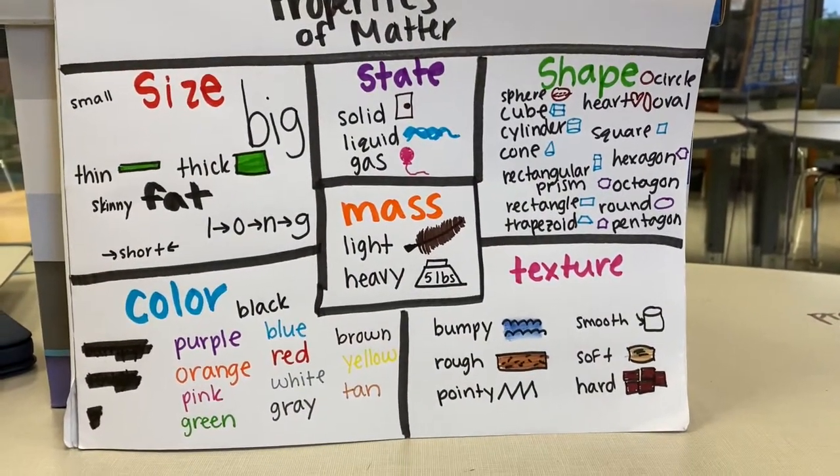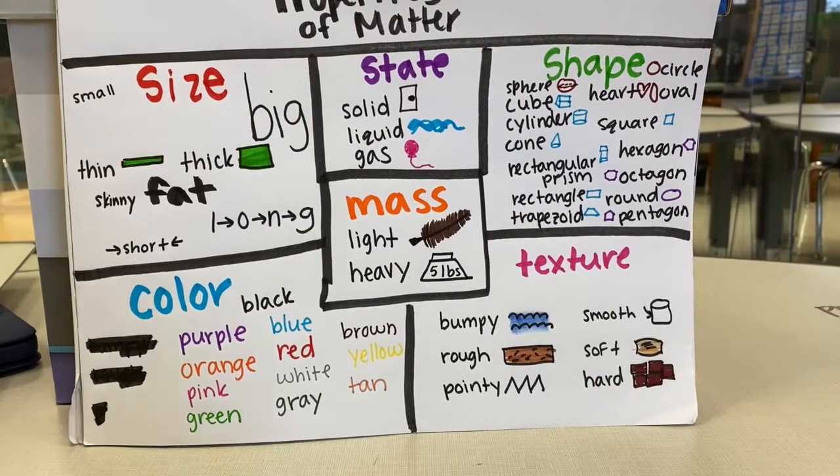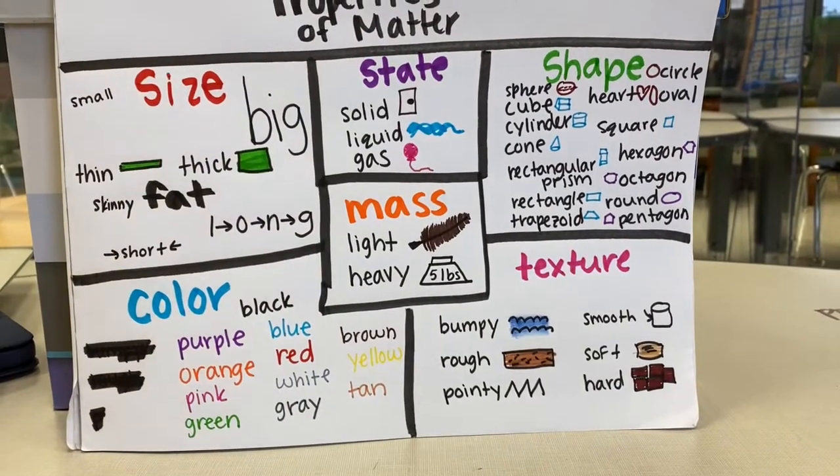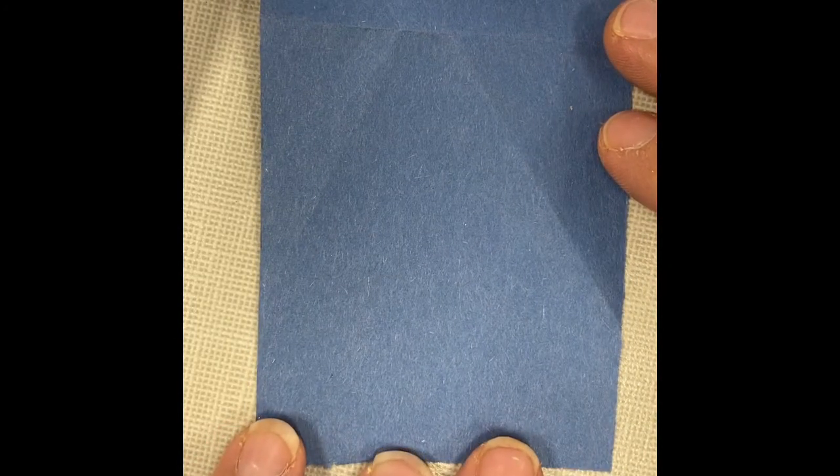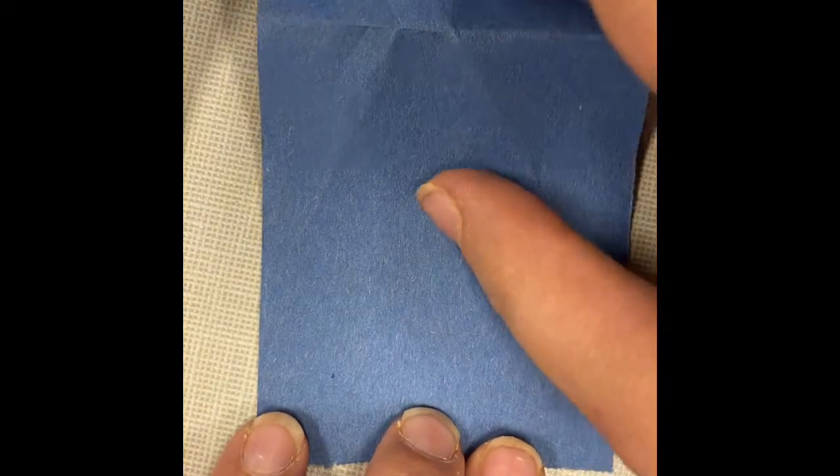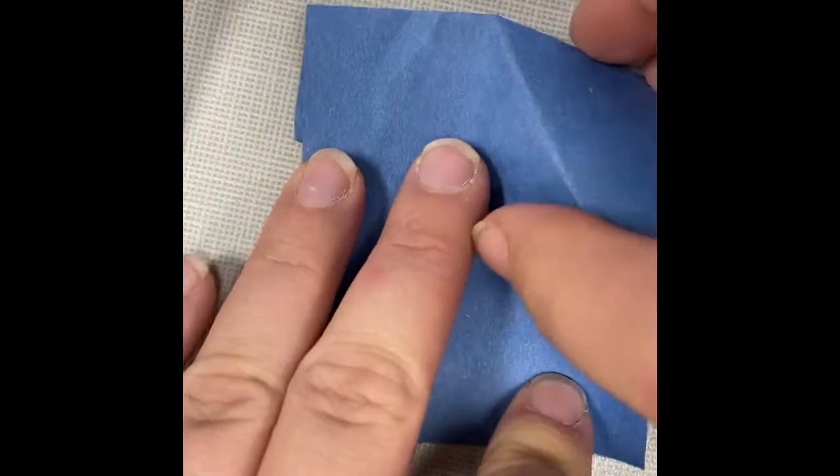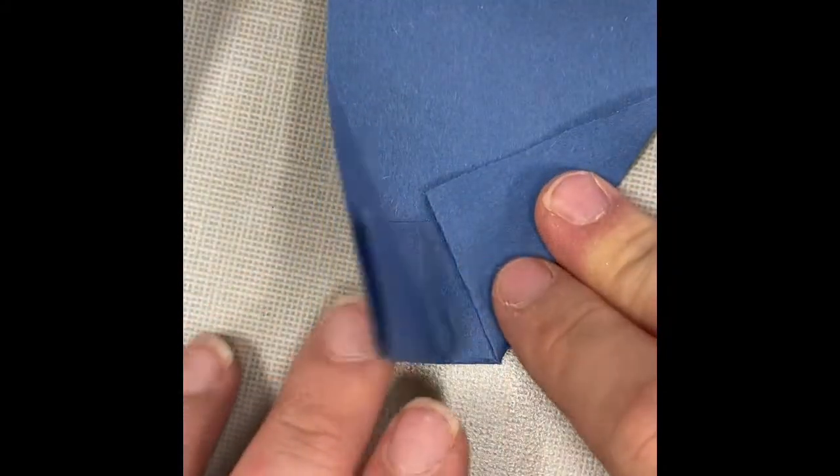So we're going to look a little bit closer at each way that we can change matter. So one way I can change matter is by folding it. Here I have a rectangular piece of paper, that's its shape, and if I start folding it, I can fold the pieces in, and fold the corners in.